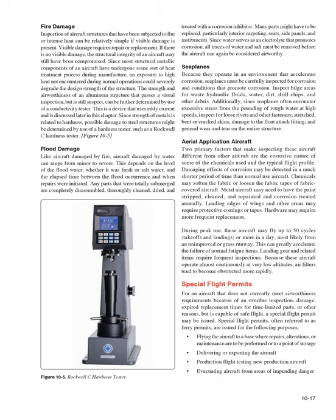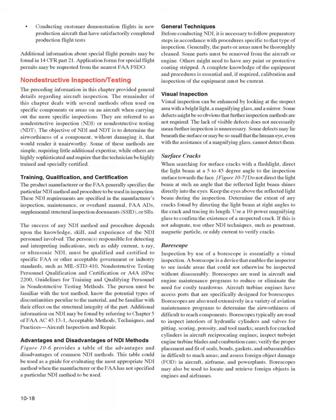Special flight permits: For an aircraft that does not currently meet airworthiness requirements because of an overdue inspection, damage, expired replacement times for time-limited parts, or other reasons — but is capable of safe flight — a special flight permit may be issued. Often referred to as ferry permits, they are issued for: flying the aircraft to a base where repairs, alterations, or maintenance are to be performed or to a point of storage; delivering or exporting the aircraft; production flight testing new production aircraft; evacuating aircraft from areas of impending danger; conducting customer demonstration flights. Additional information may be found in 14 CFR Part 21, and application forms may be requested from the nearest FAA FSDO.